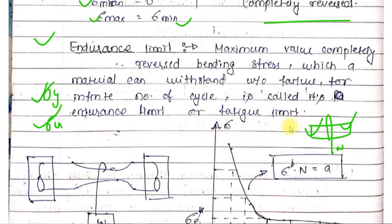So endurance limit is the maximum value of completely reversed bending stress which a material can withstand without failure. This endurance limit corresponds to a certain number of cyclic loadings.